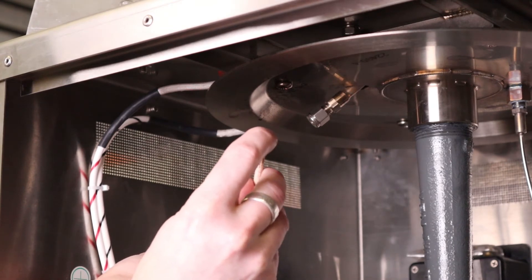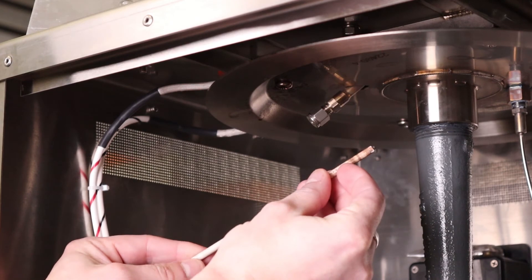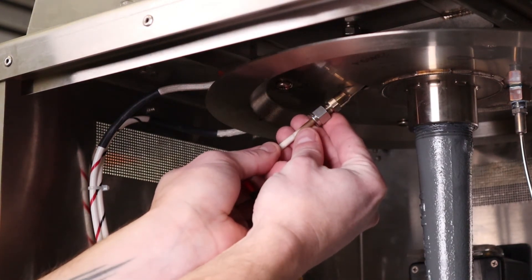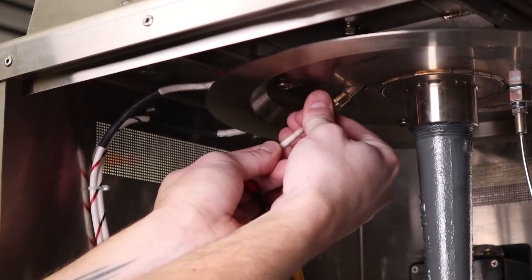Inspect the tip for any wear or any cracks along the insulation. Reinstall the electrode and use the mark you've made as an indicator of where to stop and then hand tighten the fitting.